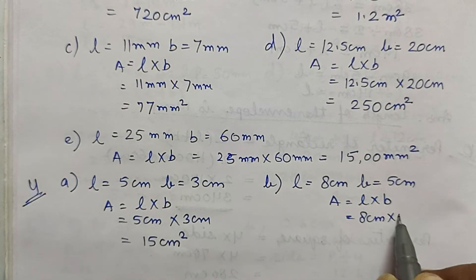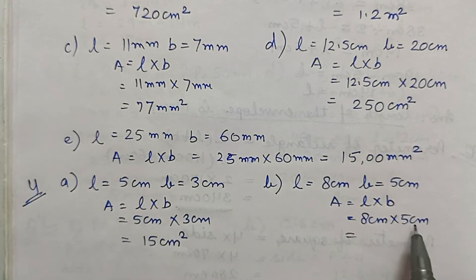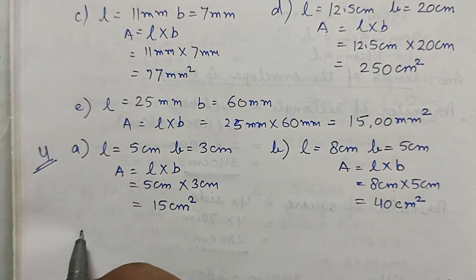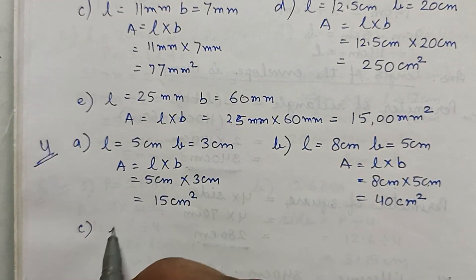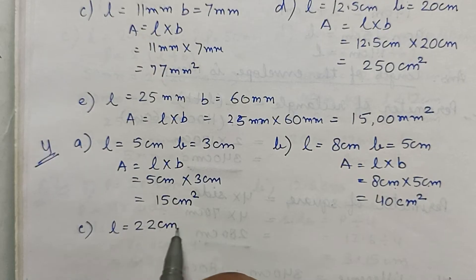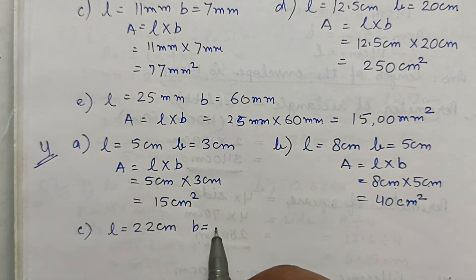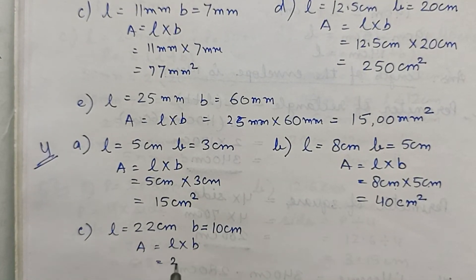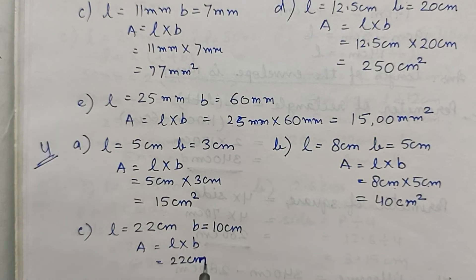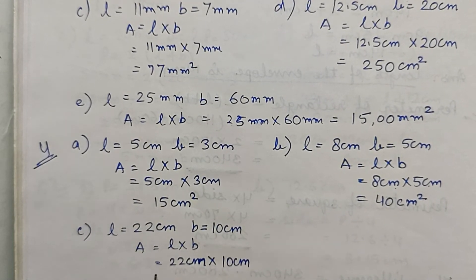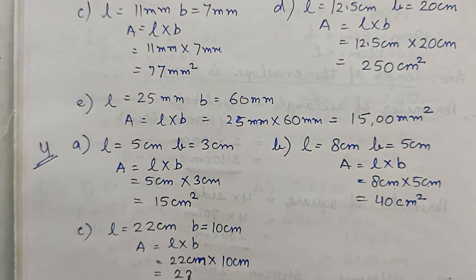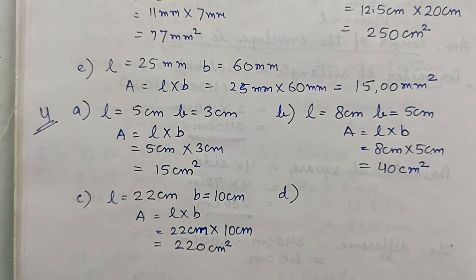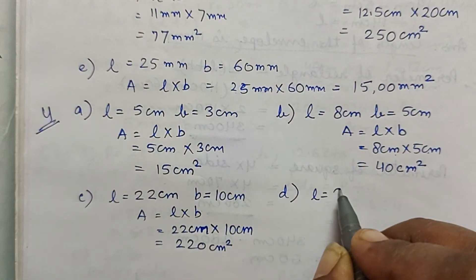8 centimeter × 5 centimeter is equal to 40 centimeter square. Part c: length is 22 centimeter and breadth is 10 centimeter. Area is equal to L × B, so 22 × 10 = 220 centimeter square.